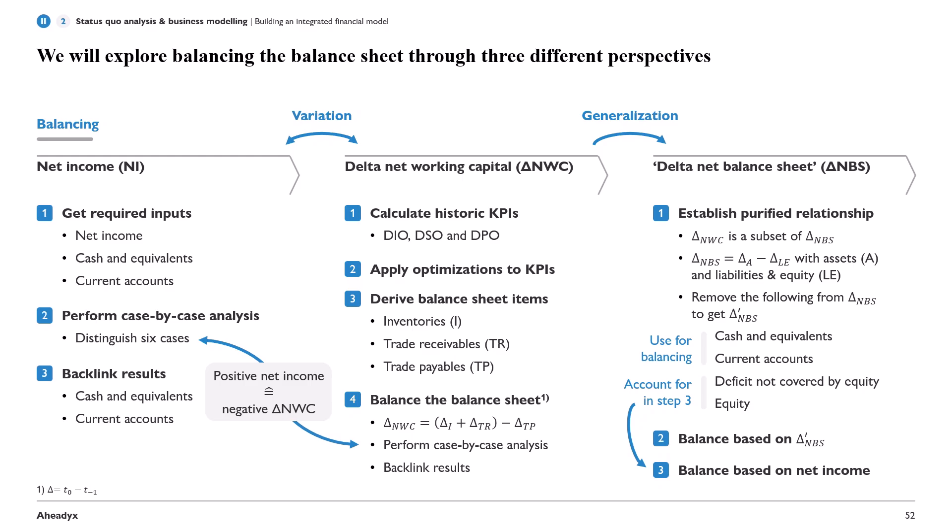So we will first balance based on delta net balance sheet, excluding cash and equivalents, counter-counts, deficit-not-coded equity, and equity. Then as a second or third step, we will balance based on net income. This is useful for two reasons: first, it separates the net income effect, which is informative in nature; and second, it gives us more control over what we are doing in the model.